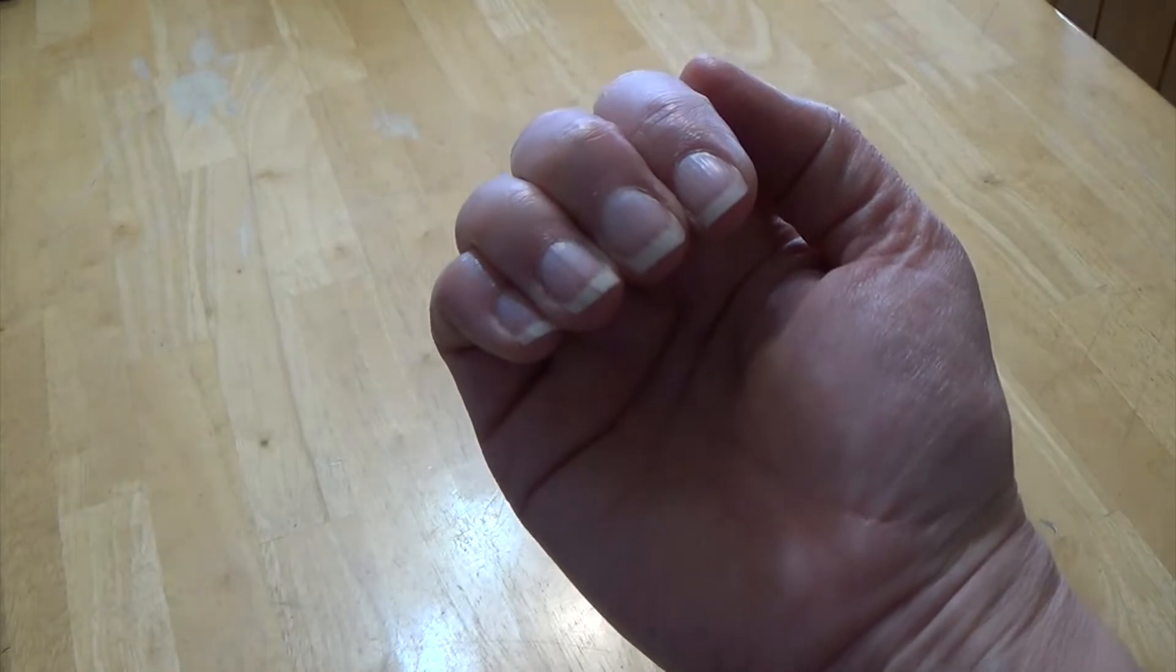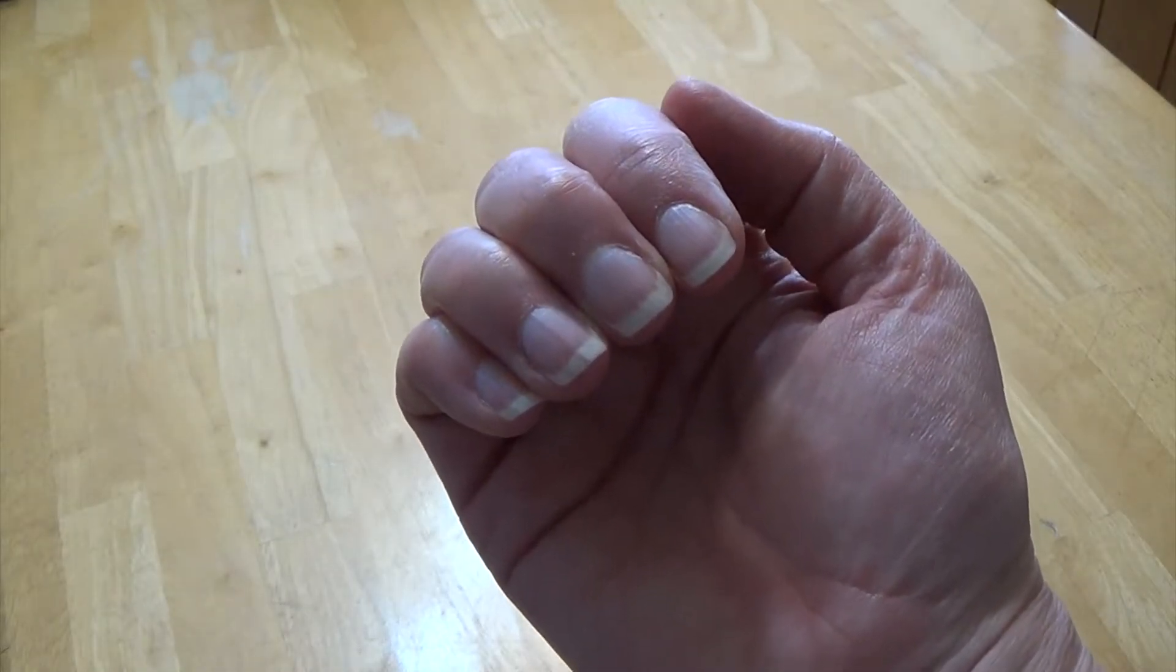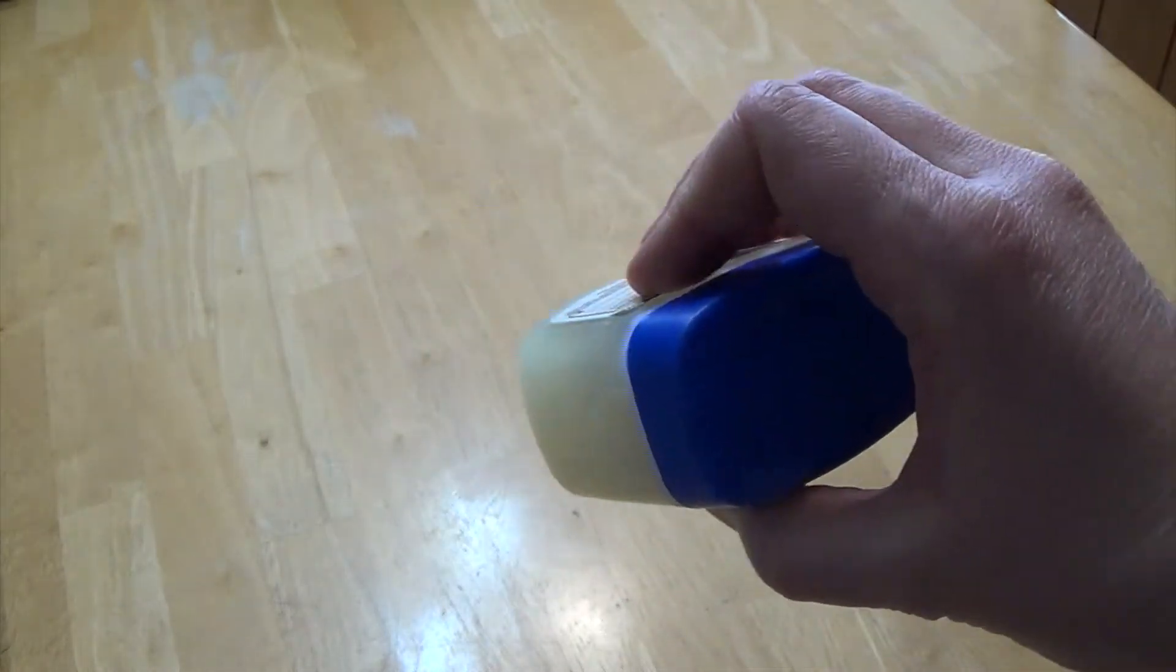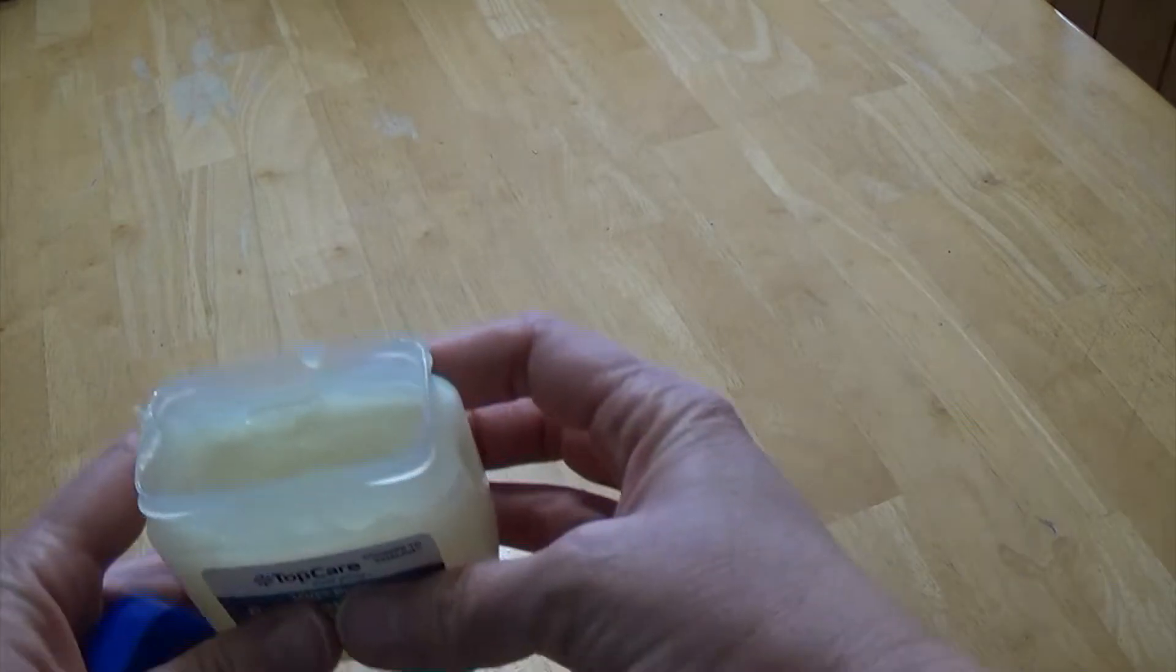If you have fingernails that you don't like to have dirt stuck under, all you have to do is take some petroleum jelly, Vaseline, whatever, and put it underneath your fingernails, like so.